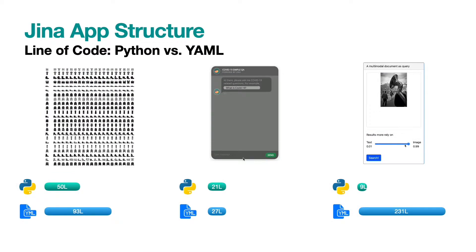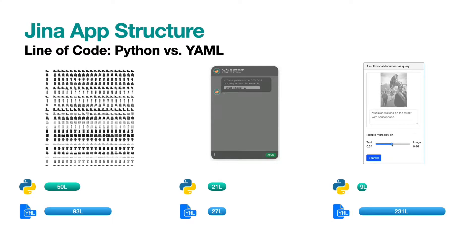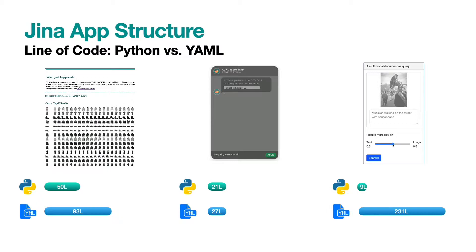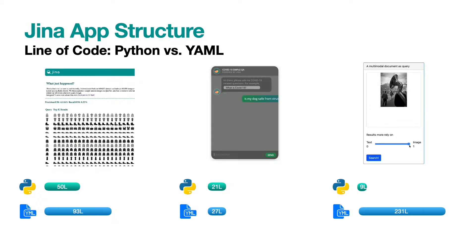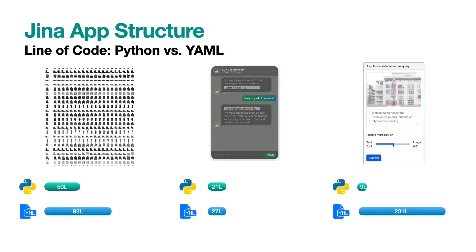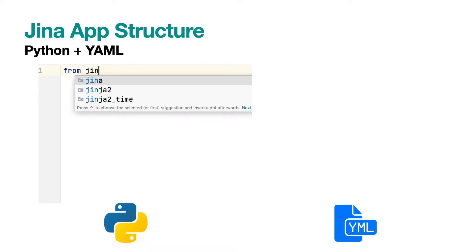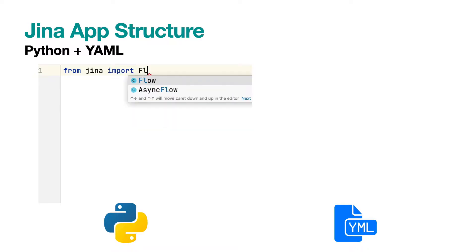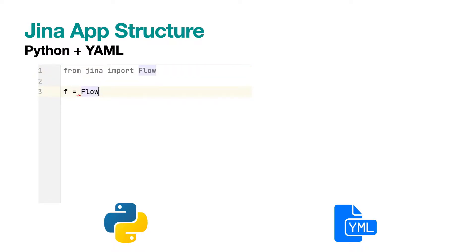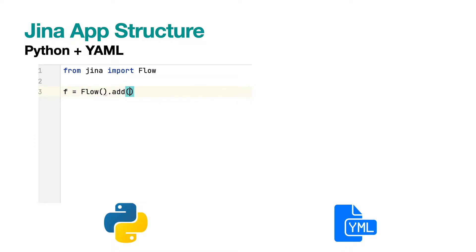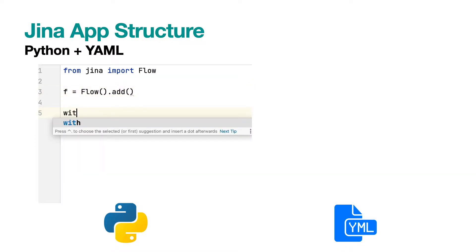Depending on the cases and the depth of customization, you can develop the project in both ways. In GINA, it is even possible to build a completely code-free project that only depends on the YAML config. Most IDEs have provided nice intelligence for Python development. Thanks to the straightforward APIs, type hints, and 100% docstring coverage in GINA framework, you can enjoy a pretty smooth development experience.